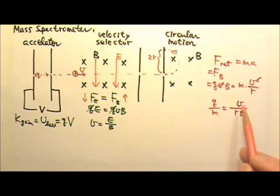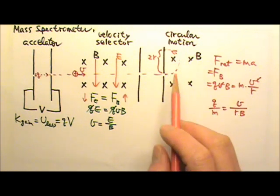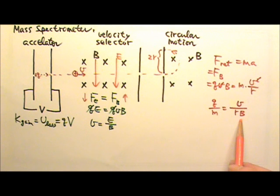That means that we can get this charge to mass ratio that equals to V over RB. And we know the speed because we could measure the speed using this, and then we can measure the R, and then we know how strong a magnetic field we apply, so we get this value.